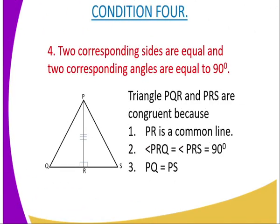Then we have the condition number four. And in this case, you can see that we have two corresponding sides are equal and two corresponding angles are also equal to 90 degrees. For instance, in this case, you can see that triangle PQR and PRS are congruent because PR is a common line. This is a common side into both of the triangles, that is PRQ and also PRS.